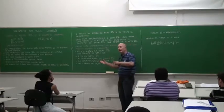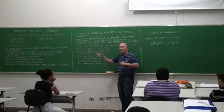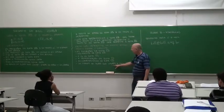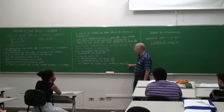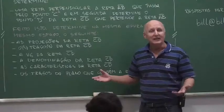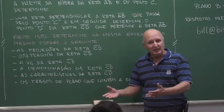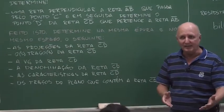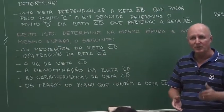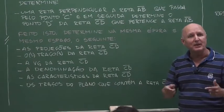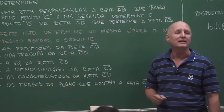And the characteristics of line CD: if it is perpendicular, parallel, oblique to one plane, perpendicular to another. And finally, the traces of the plane that contains line CD. You will determine its VG. After determining the VG, you will determine the projections of line CD — vertical and horizontal projection. And from these projections, you will determine the traces of the plane that contains this line.